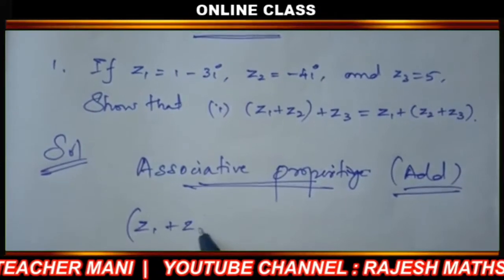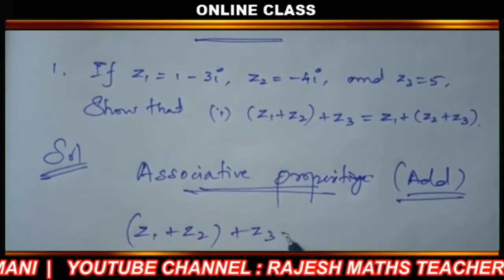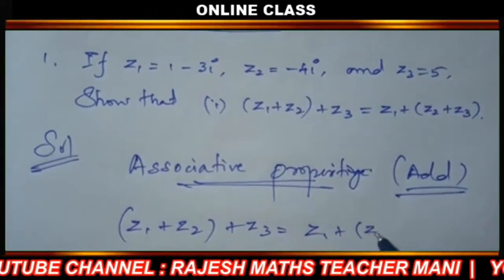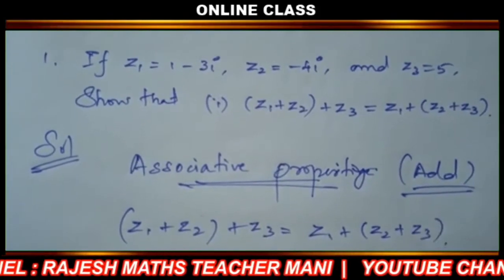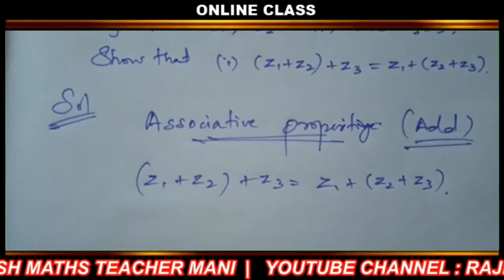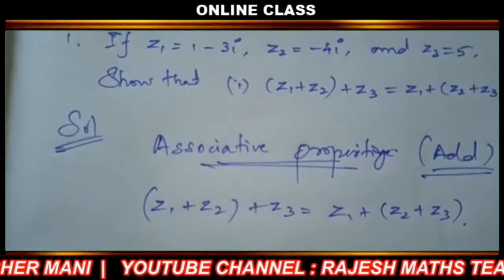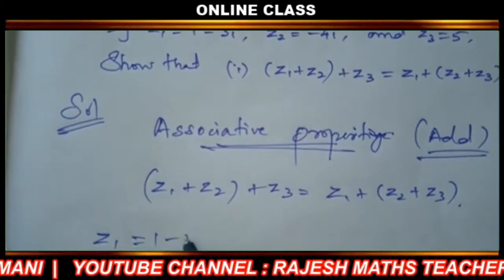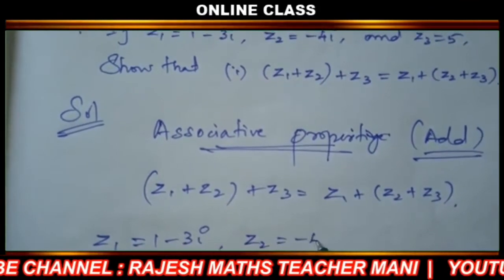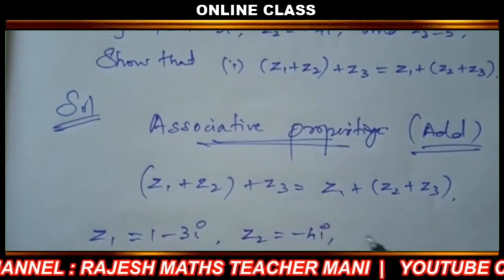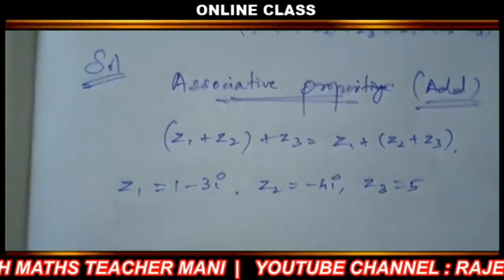Addition value: z1 plus z2 plus z3 equals z1 plus z2 plus z3. Here we have z1 value: 1 minus 3i. Z2 equals minus 4i. Z3 equals 5.